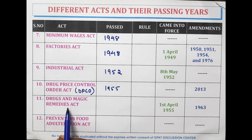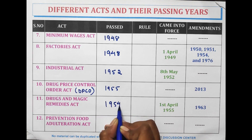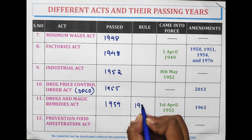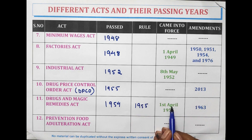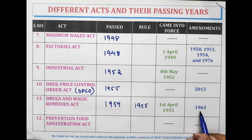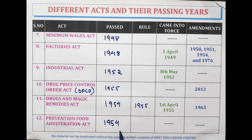The Drug and Magic Remedies Act was passed in the year 1954 and the rules in 1955. It came into force on 1st April 1955, and amendments were done in the year 1963. The Prevention of Food Adulteration Act was passed in 1954 and the rules in 1955.